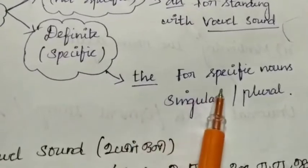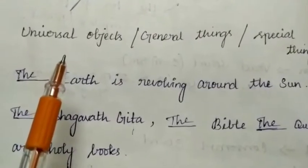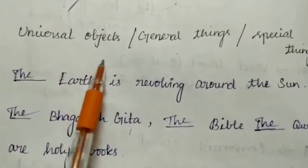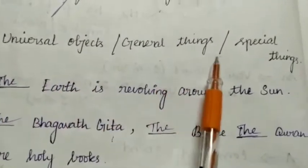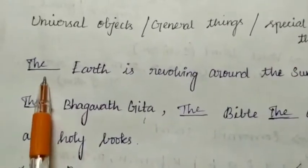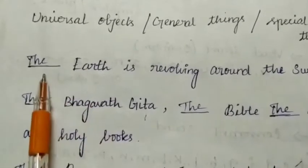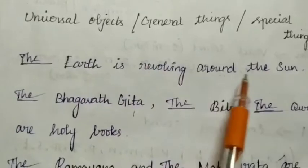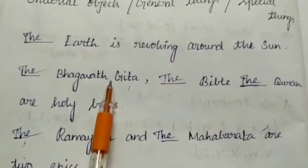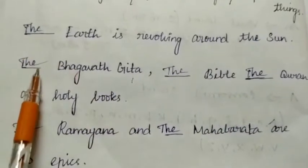Next: Definite Article — 'the'. We have to use 'the' for a specific noun, both singular and plural. We use 'the' before universal objects, general things, and special things. For example: 'The earth' — this is a universal object. 'The earth is revolving around the sun.' Next: Bhagavad Gita is common for all people, so we use 'the': 'The Bhagavad Gita'.